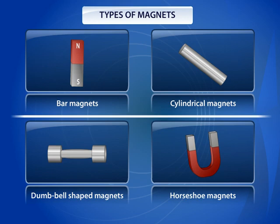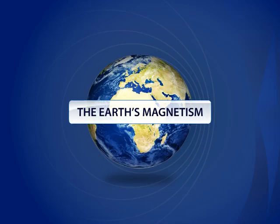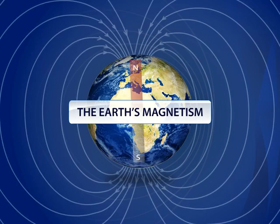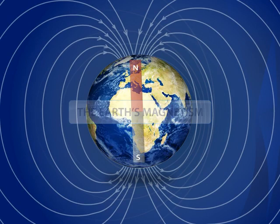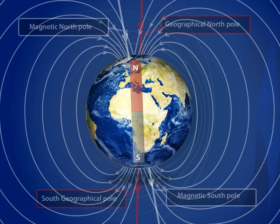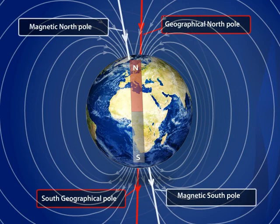The Earth's Magnetism: The Earth behaves like a huge magnet. The magnetic North Pole acts as a geographical North Pole, and the magnetic South Pole acts as a geographical South Pole.